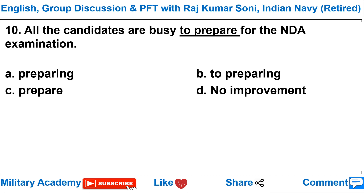Question 10: 'All the candidates are busy to prepare for the NDA examination.' This question is about the correct use of infinitive versus gerund. When you use the verb 'to be' plus 'busy', it should not be followed by an infinitive — it should be followed by a present participle, i.e., a gerund (verb + ING).